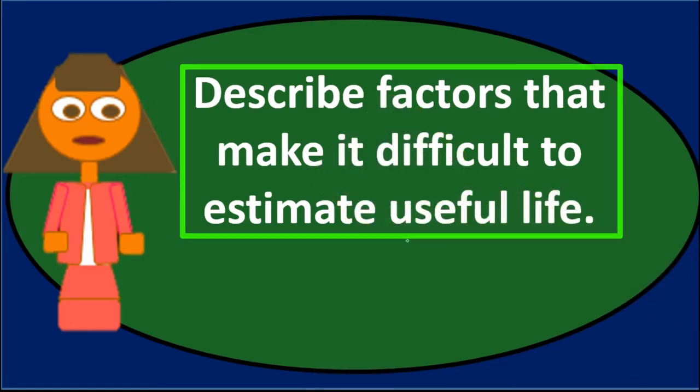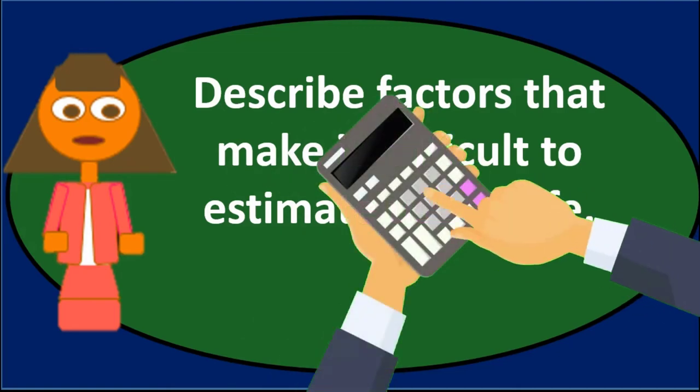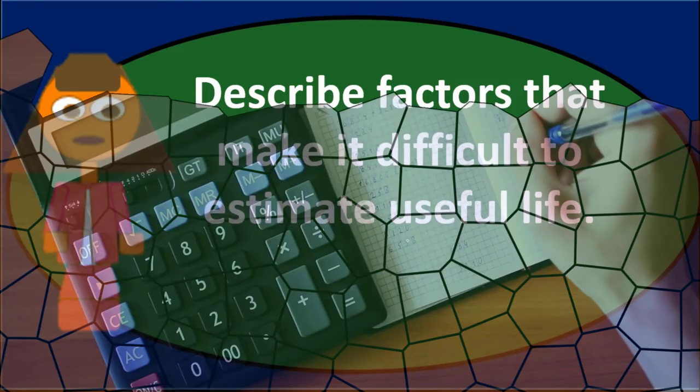It's also possible that there could be obsolescence that's difficult to know, especially in today's time, where we could buy a piece of equipment that pretty soon gets outdated. A new piece of equipment comes out that's a lot more efficient and a lot better, making the old piece obsolete. If that happens, it's going to be difficult for us to calculate when that's going to happen, when this new technology is going to take place and make the piece of equipment obsolete.